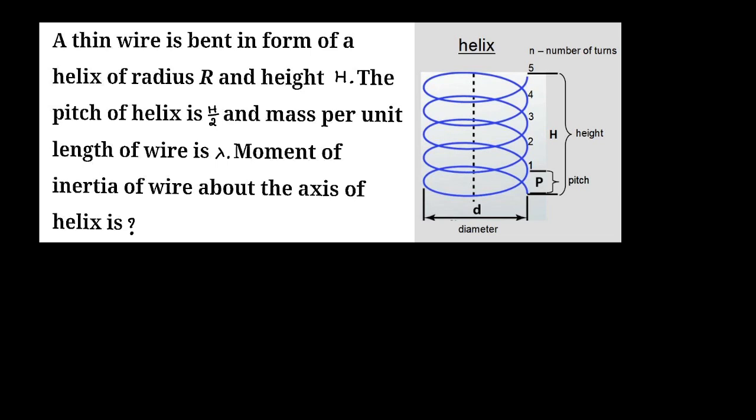I've just given one example here to have better idea about helix structure. See here we have this blue color spring-like structure which we are considering as helix where number of turns is n and height of that spring-like structure is capital H and pitch is P. If you want number of turns, it is going to be overall height divided by the pitch. That gives us number of turns.